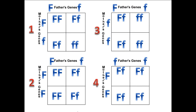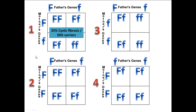Here we are back to these four Punnett squares. In the first, we have a father that's a carrier and a mother that's a carrier. Notice neither of these parents have cystic fibrosis — they might not even know they're carriers — but they have a 25% chance of having a child with cystic fibrosis and a 50% chance of having children who are also carriers. In the next scenario, mom is not a carrier but dad is a carrier. Looking at the possible combinations, none of the children will have cystic fibrosis, but 50% of the children will end up being carriers.